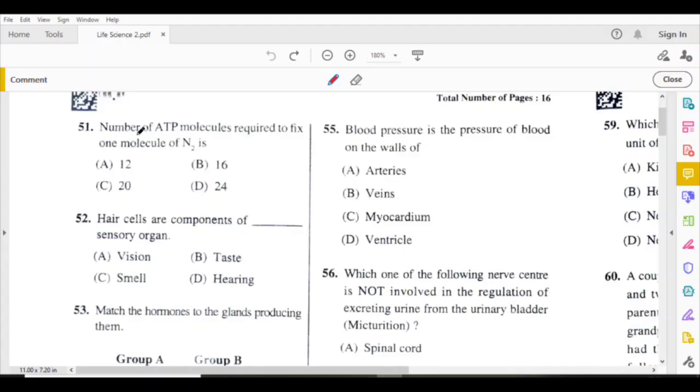51st question: Number of ATP molecules required to fix one molecule of Nitrogen is 16.